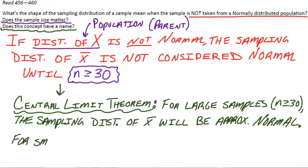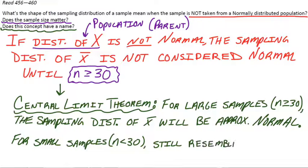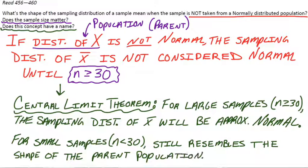Because using that same logic, if we have small samples, so if we have sample sizes less than 30, the sampling distribution is still going to look like the parent distribution. So when we're talking about sample means, we can use normal calculations because of the Central Limit Theorem, as long as our sample size is at least 30.